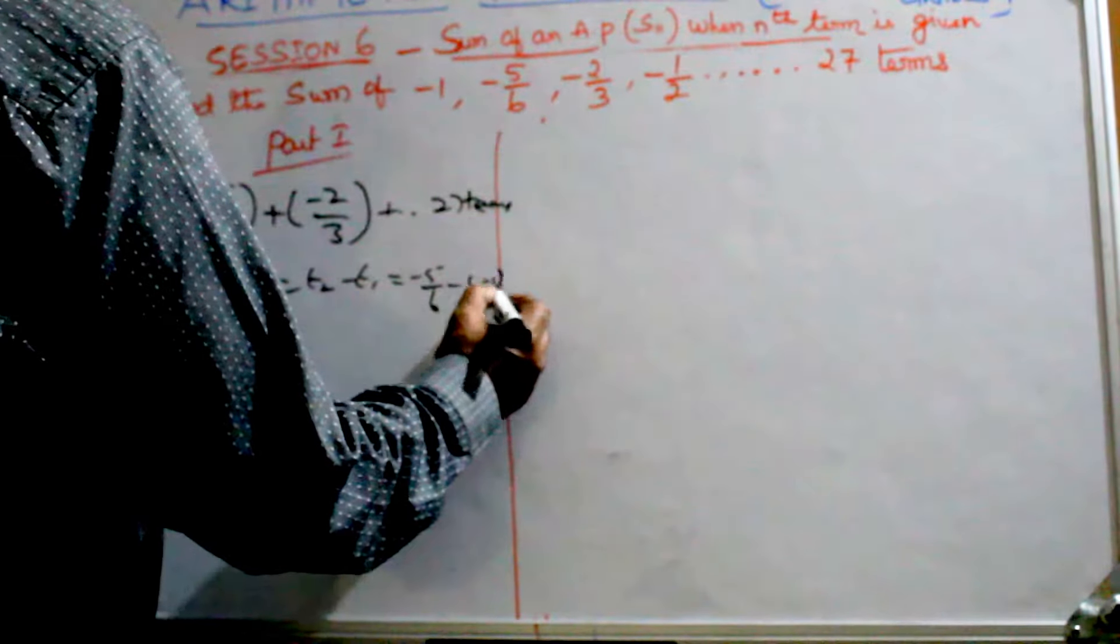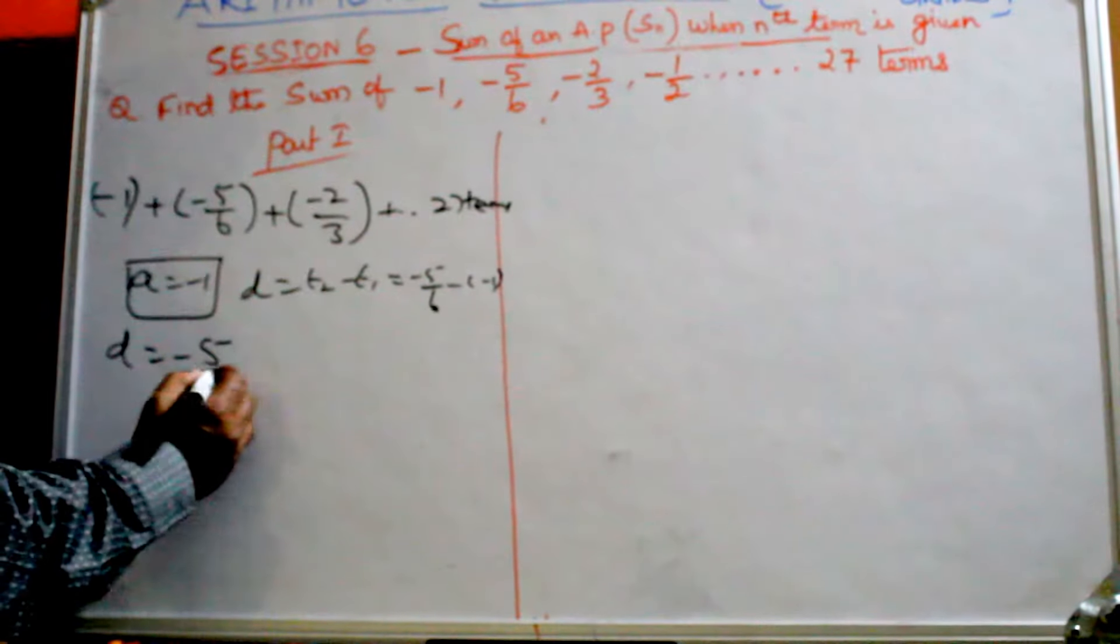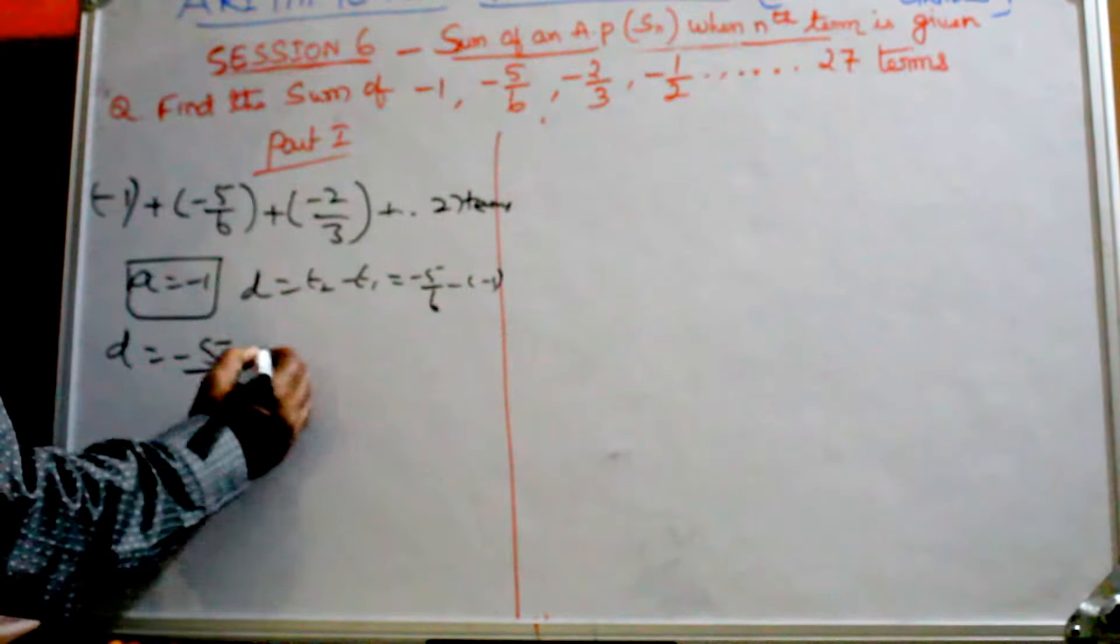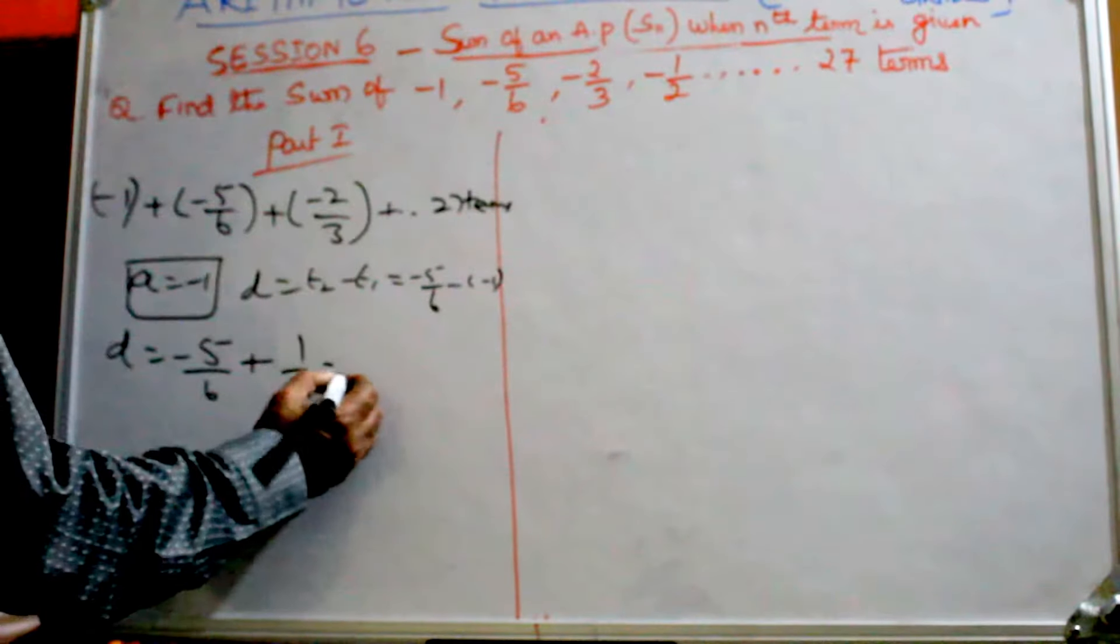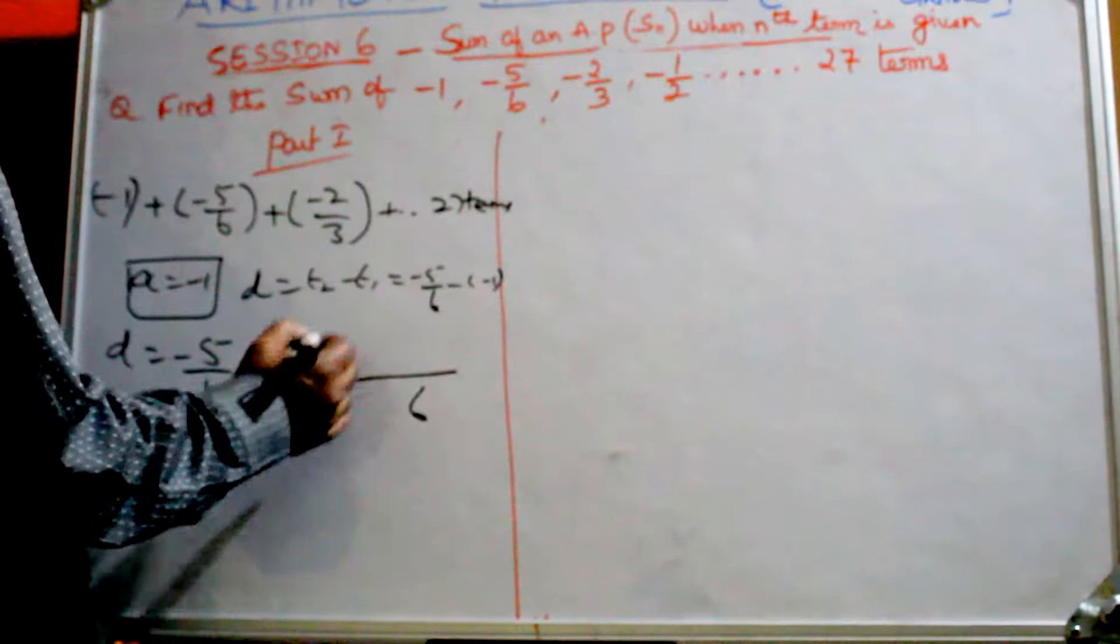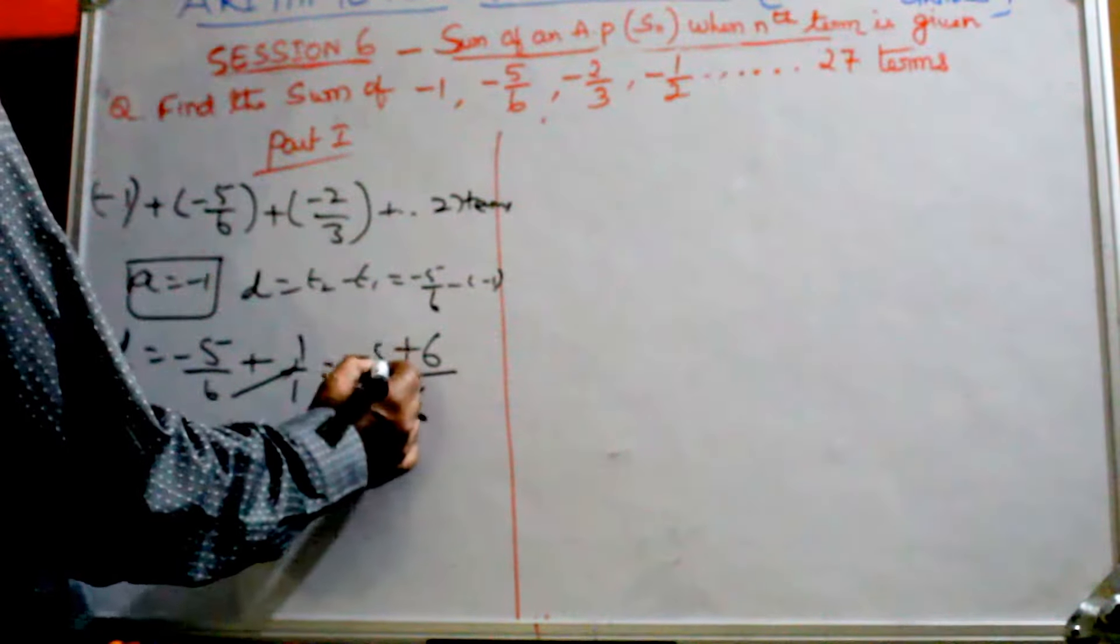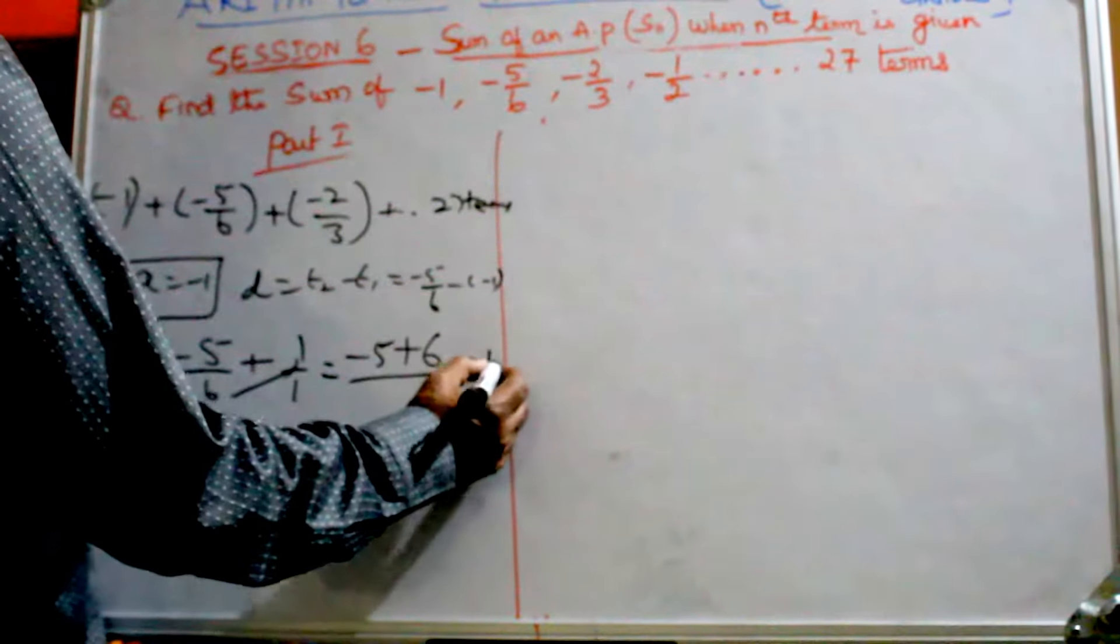Minus 5/6 minus (-1). So D will be -5/6 - (-1). Minus minus gives you plus: -5/6 + 1. The LCM is 6, so 6 goes there, this 1 goes there, you get -5. 6 minus 5 is 1/6.